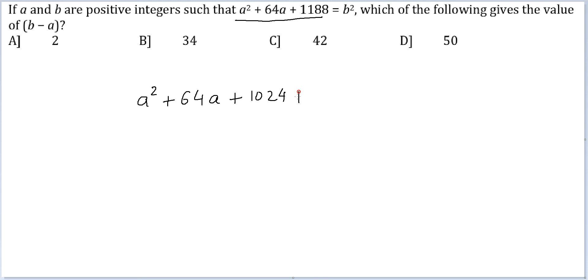1024 plus 164 is equal to b². So you get (a + 32)² + 164 = b².